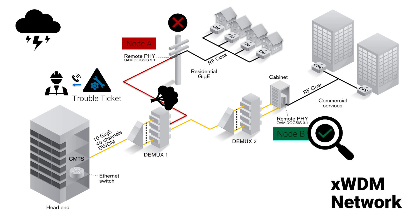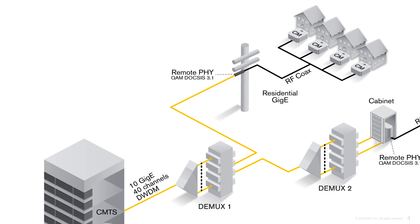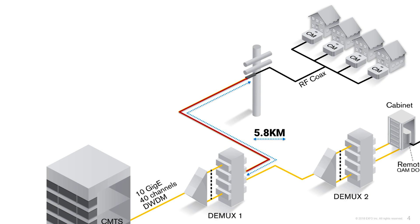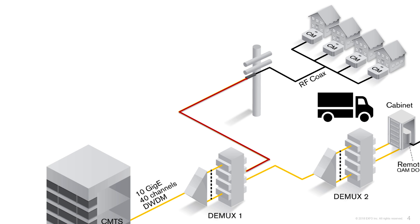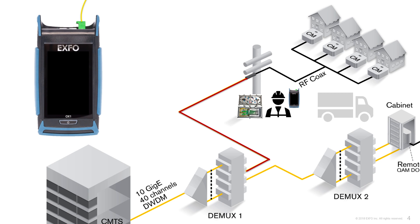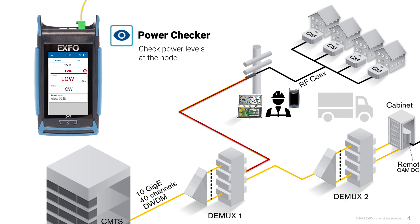The first bit of info we'll need is the length of the span between the DMUX and node A. In this case it's 5.8 kilometers. We'll then roll the truck to node A and do a preliminary power check at the RX. Using the OX1's power checker function, we will see that there is no power or light at the node.